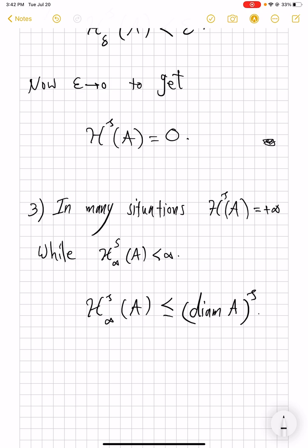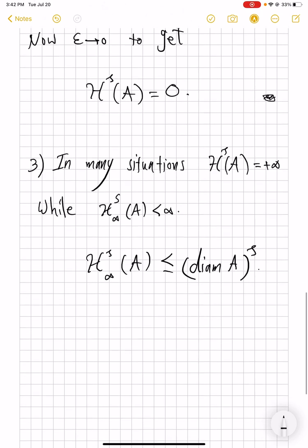If the diameter of A is plus infinity, then this inequality holds by default. And therefore, if you have a bounded set, then H^s_∞ is always a finite value. While H^s of A can be plus infinity, in the examples where we motivated the definition of Hausdorff measure, we pointed out that we can have a bounded set that nevertheless has infinite length in it.